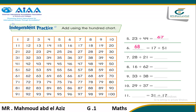Another question: 28 plus 21. Where is 28 on the 100 chart? That's 28. Plus 21. The number in tens is 2, so we will go down 2 steps: 1 and 2. So our number is 48. The ones digit is 1, so we will go ahead one step. It's 49. So our sum is 49.